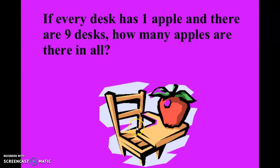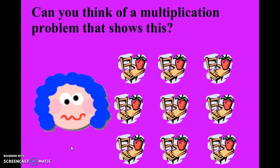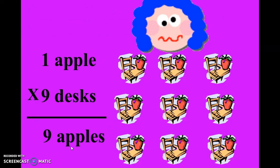If every desk has one apple and there are nine desks, how many apples are there in all? Can you think of a multiplication problem that shows this? This one's very simple because any time you take a digit and multiply it by one, it's going to equal the first digit. For example, one apple and nine desks equals nine apples.